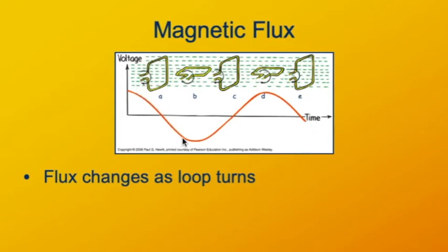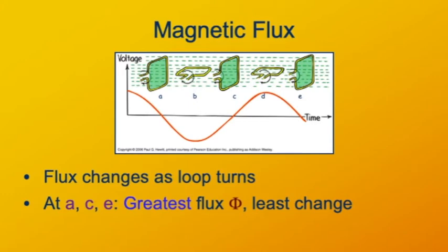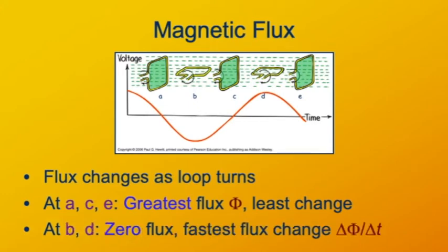The EMF alternates positive to negative because the current alternates going into or out of one of the terminals. The rate of flux change, and thus the EMF, has its greatest absolute value when the flux is zero.